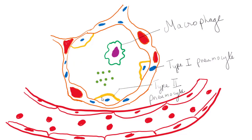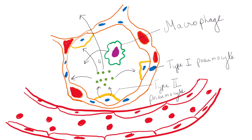These newly formed coronaviruses exit the type 2 pneumocyte and enter the lumen of the alveolus, infecting other pneumocytes and spreading to other alveoli. The macrophage senses this infection and attempts to counteract it by releasing specific cytokines such as interleukin-1, interleukin-6, and tumor necrosis factor-alpha (TNF-α).